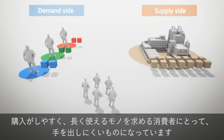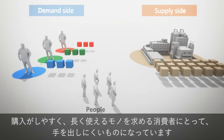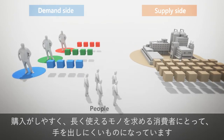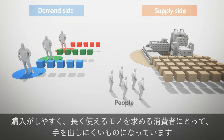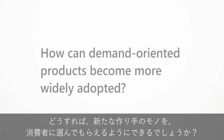Most people want products that can be easily purchased and stand the test of time. So it is difficult to achieve greater adoption. How can demand-oriented products become more widely adopted?